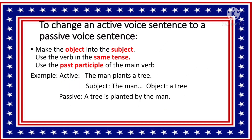What to do when you want to change an active voice sentence into a passive voice sentence? First, make the object into the subject and use the verb in the same tense — don't change the tense. And the most important thing is the use of the past participle of the main verb. The past participle has to be there.